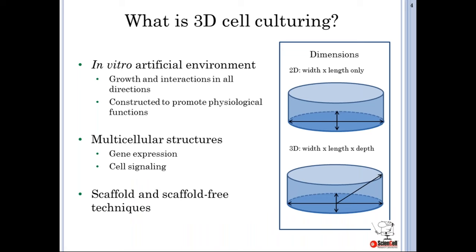3D cell culturing utilizes the depth dimension, or the z-plane, in contrast to traditional 2D monolayer culturing which only utilizes the x and y planes. It is still entirely in vitro, meaning it uses an artificial growing environment, but cells are allowed to grow in a 3D substrate and cell-cell and cell-ECM interactions are 360 degrees. The 3D substrate can also be formulated or architected to promote certain physiological functions.